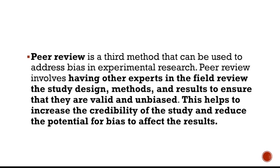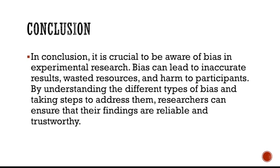We also have peer review as a third method to address bias in experimental research. Here, you have an expert in the field review the study design, methods, and results to ensure that everything is valid and unbiased. For example, a research advisor will run through your chapters one to three, check how you plan to gather data, review everything, and give inputs — such as noting that a particular sampling technique may introduce biases. You can tap professors to do this peer review, and they must be qualified. This helps increase the credibility of the study and reduce the potential for bias.